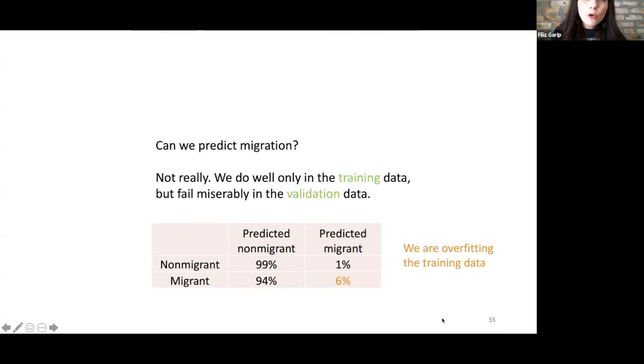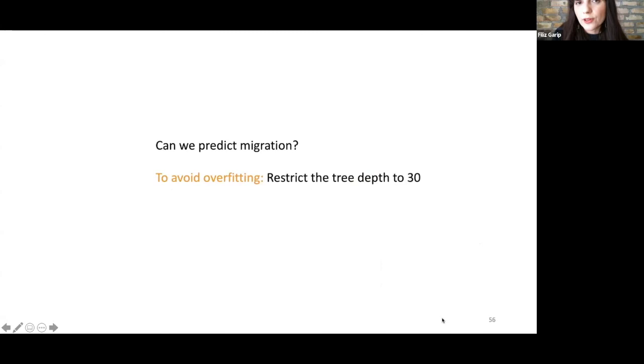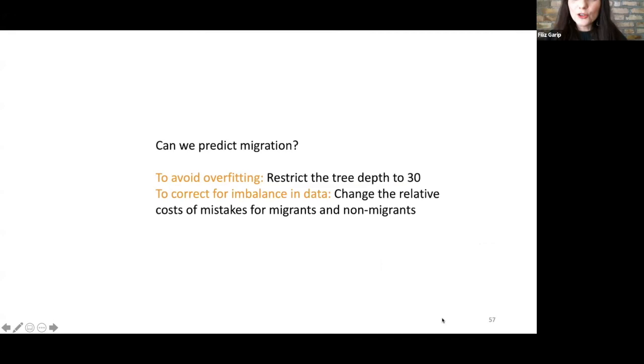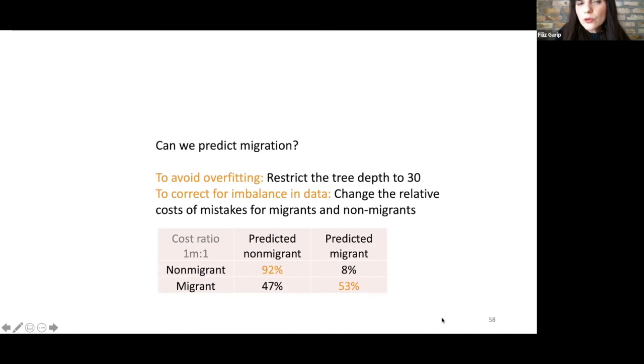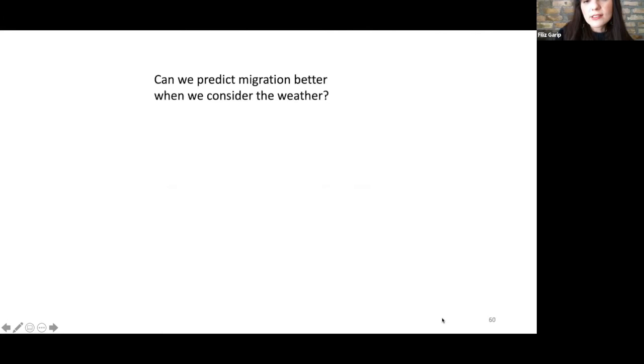How do we correct for that? We can tell our model not to be too complex. We can restrict the tree depths to 30. And when we do that, our predictions improve on the new data. We can also change the relative cost of making a mistake for migrants versus non-migrants. We can tell our model that it's a lot more expensive to make a mistake on who's going to be a migrant than who's never going to migrate. When we do that, our predictions improve quite a bit. Now we can predict migrants with about 53% accuracy, which is still not amazing, but our predictions for non-migrants have dropped. If we further tinker with the cost of making mistakes, we can actually make the predictions for migrants quite accurate at 99%, but then our predictions for non-migrants suffer. I'm just showing this to you to show that there's always a trade-off in the choices that you're making for the models.